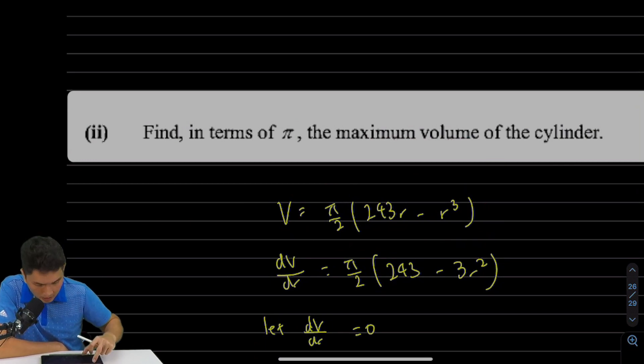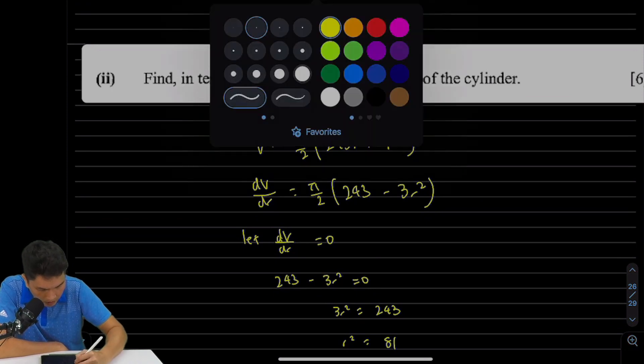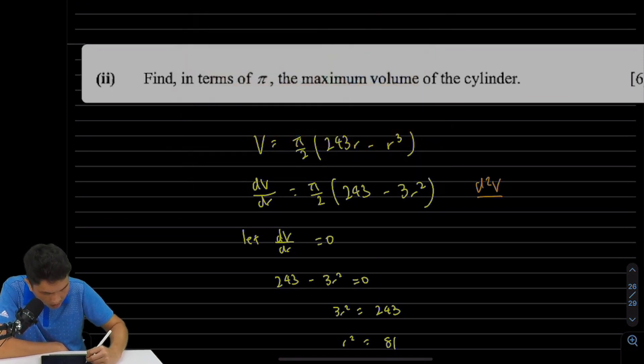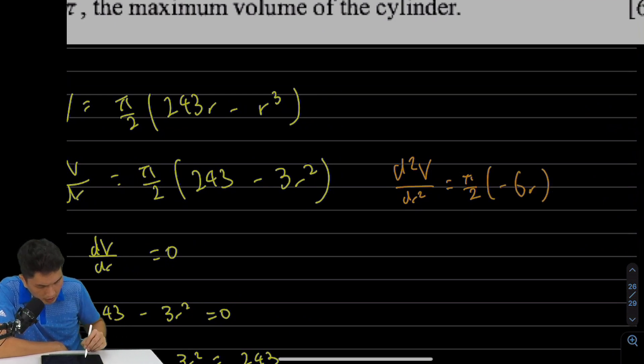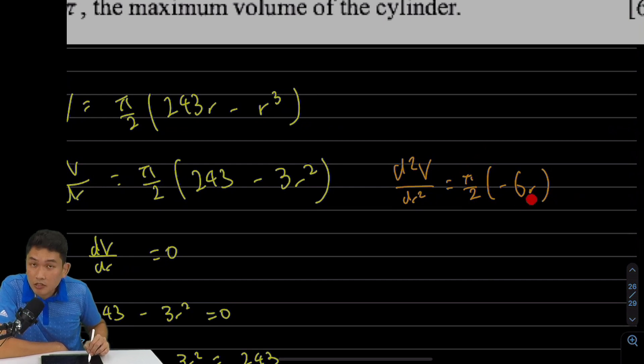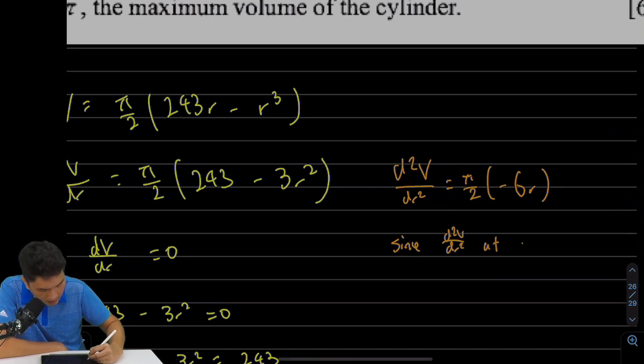I'm going to do the second derivative test. I'm going to do d²V/dr². So that is going to be π/2 times (-6r). So let's look at this thing over here. π/2 is a positive number, 6 is a positive number, r is going to be 9, a positive number. But we have a negative sign here that makes everything negative. Now when d²V/dr² is negative, we have maximum volume. Since d²V/dr² at r equals to 9 is less than 0, V is maximum.